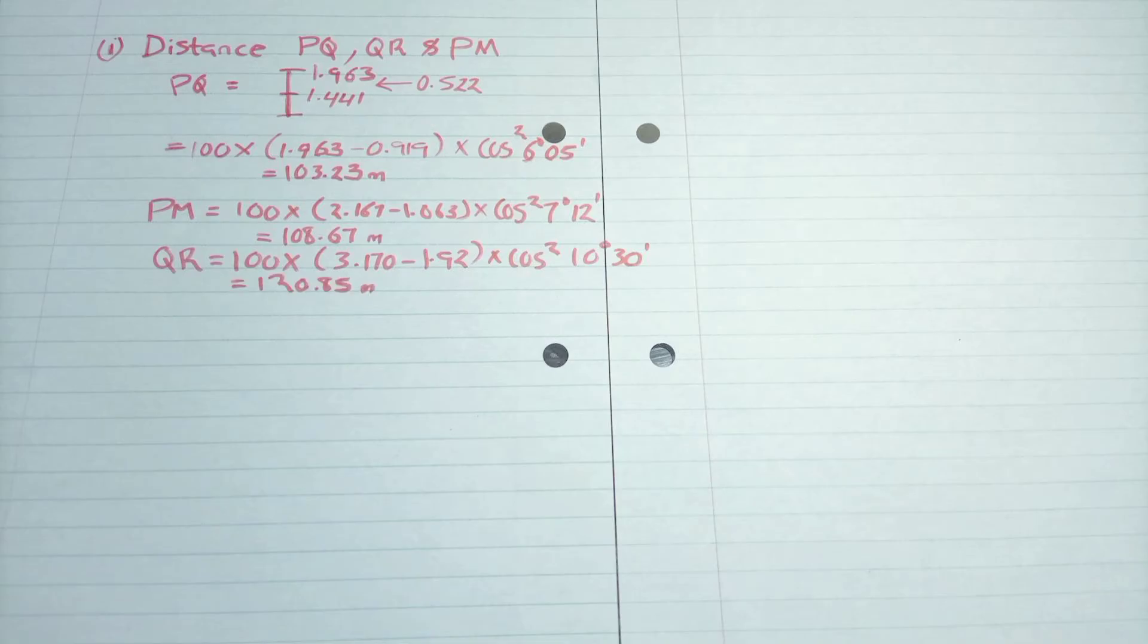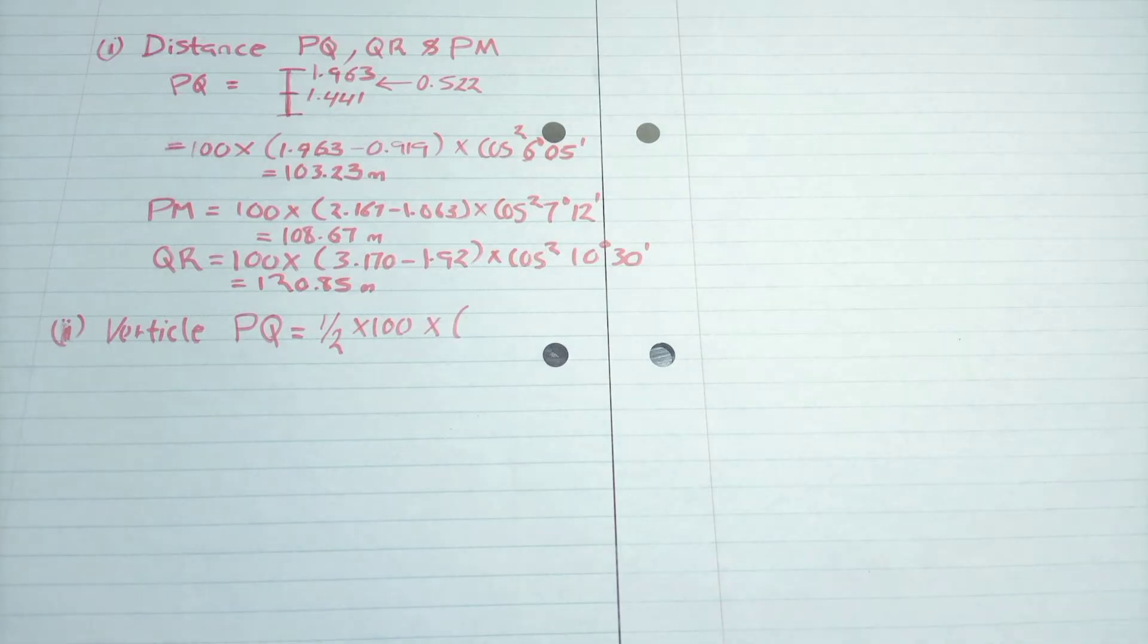So having finished that, we are going to look for the reduced levels, which we have first to find the vertical distances P and Q, which is a half K sine 2θ. So we had found where our S was from our previous calculation, and we are going to translate it there. Then you remember, so it's sine θ, then the answer you multiply by 2.